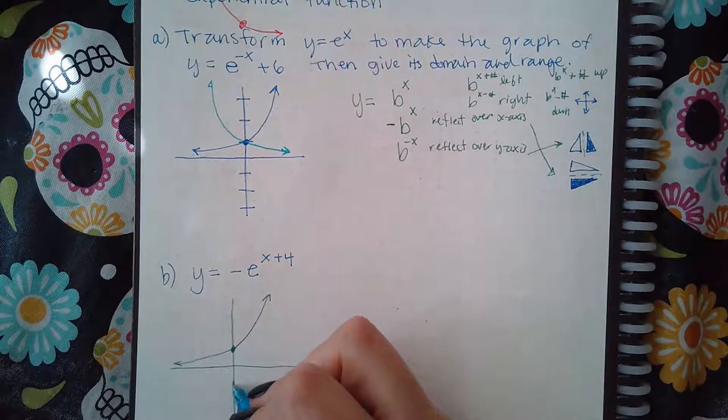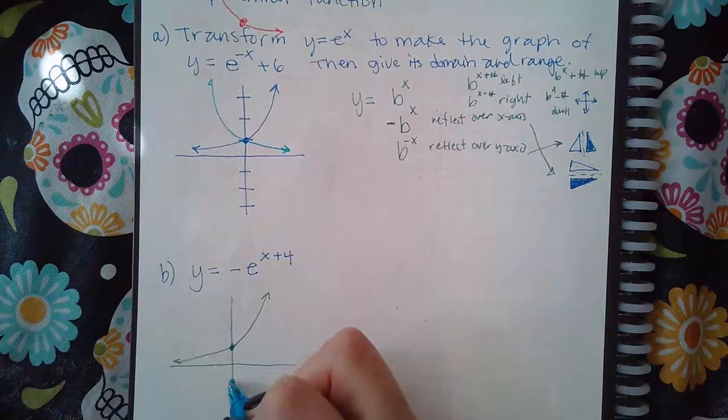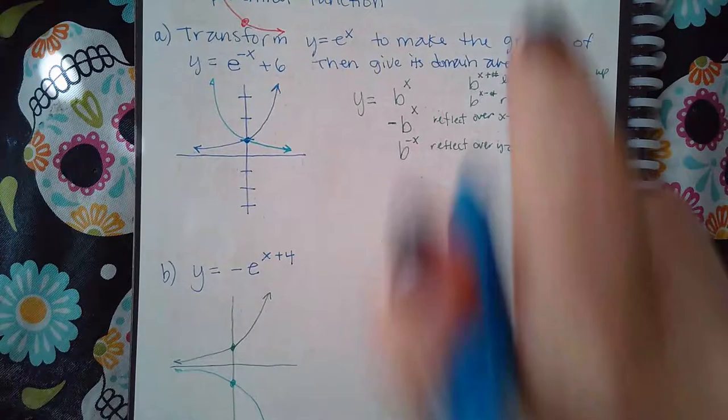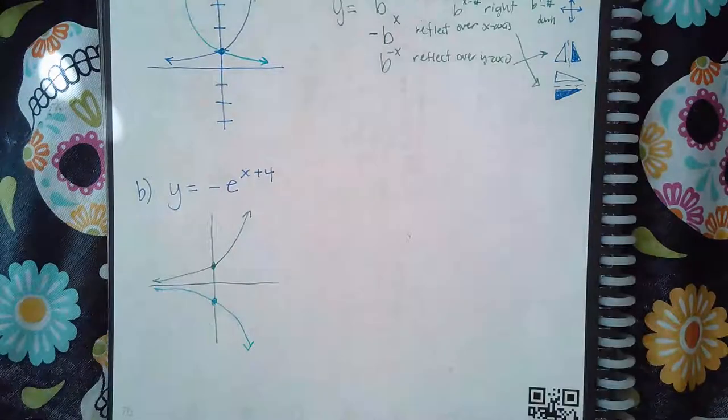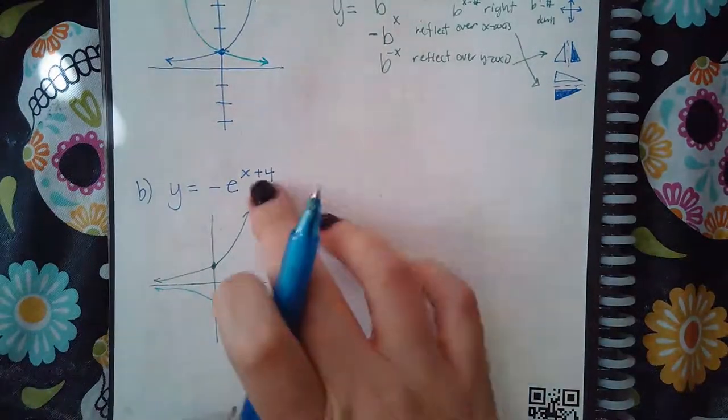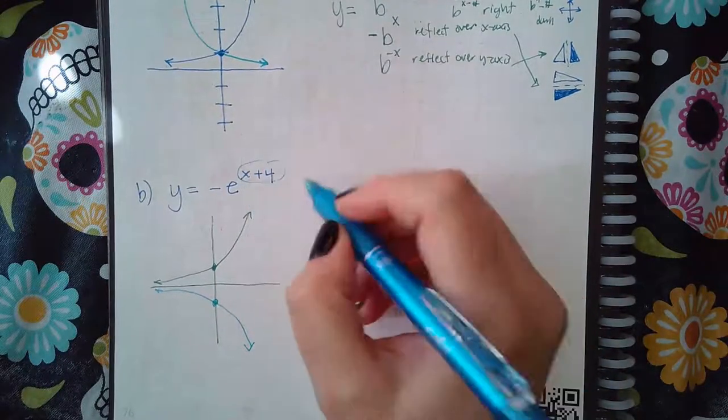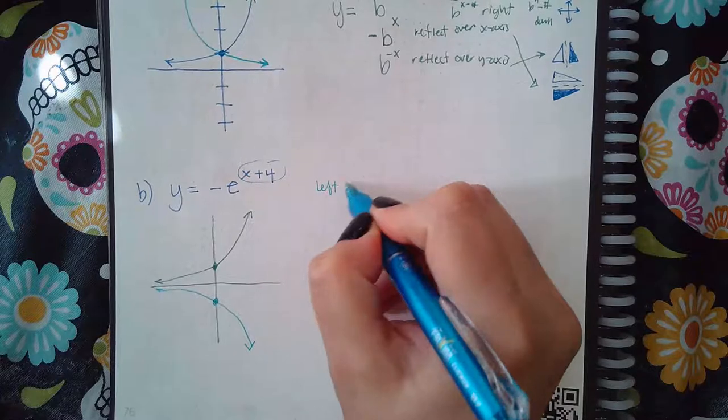When I do that, it's gonna automatically draw the reflection for me. I'm not gonna have to worry about that, whether or not it's drawn properly, because it'll do it for me. But then because of the plus four on the inside, up in the exponent, that means I'm actually gonna go to the left four.